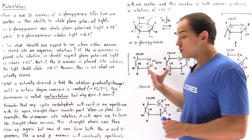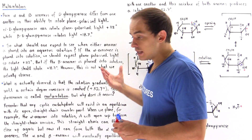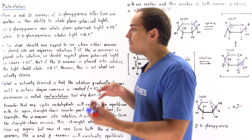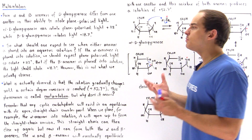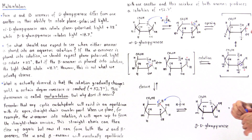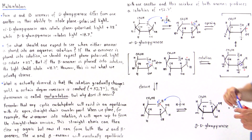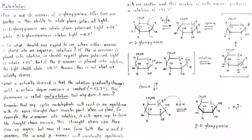Eventually, after some given amount of time, we have an equilibrium established between our alpha anomer and the beta anomer of D-glucopyranose.